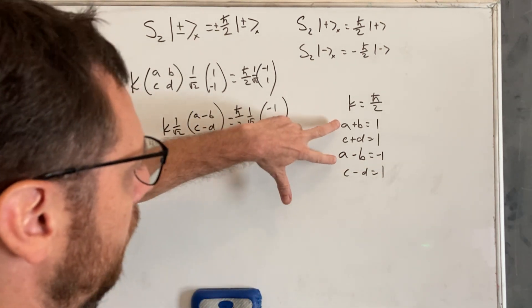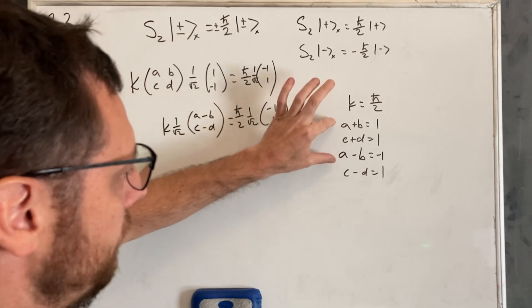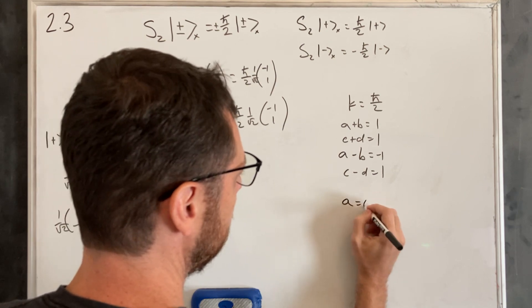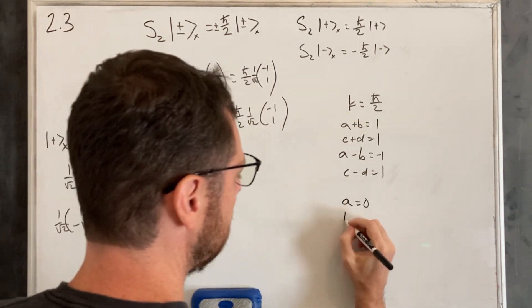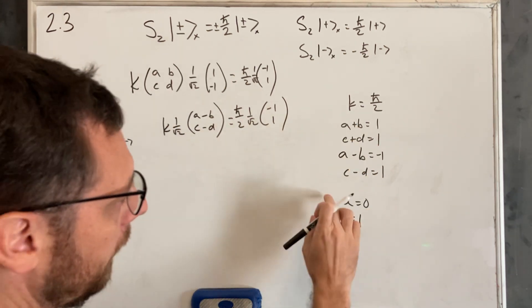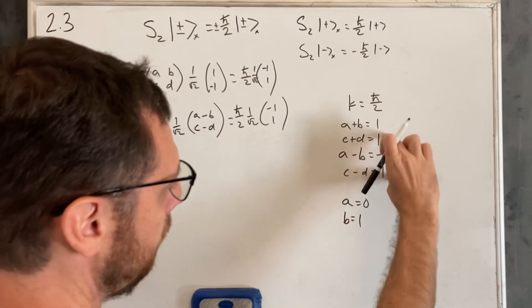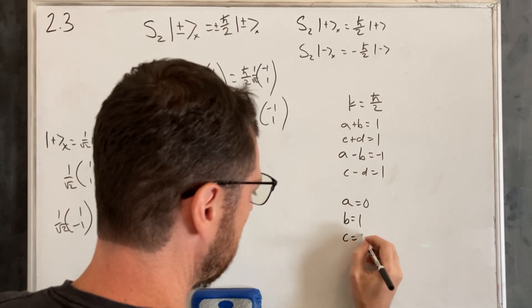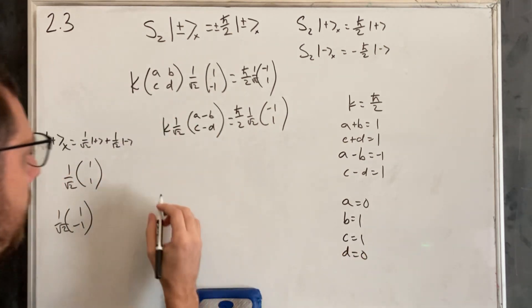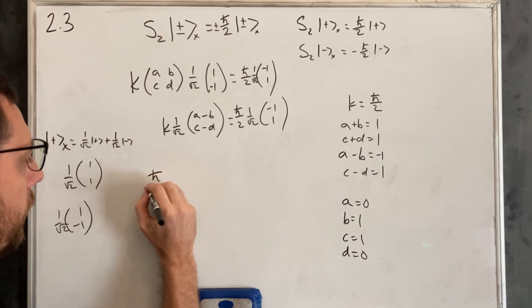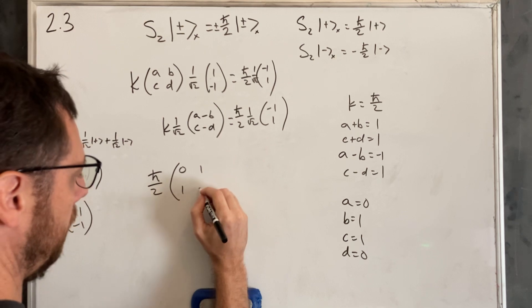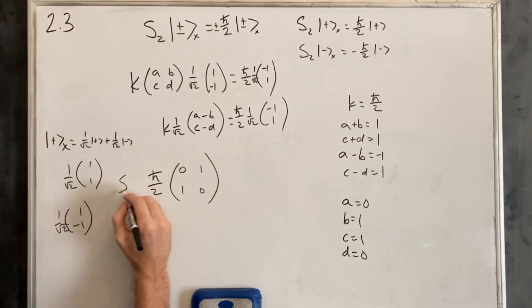Now we can combine these equations. Adding A+B=1 and A−B=−1, we get 2A=0, so A=0. If A=0, then B=1. For C and D: adding C+D=1 and C−D=1 gives 2C=2, so C=1, and D=0. Therefore K=ℏ/2, and our S_z operator is (ℏ/2)·[[0,1],[1,0]].